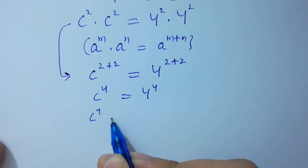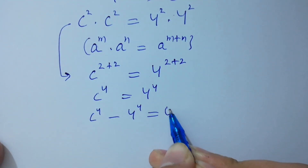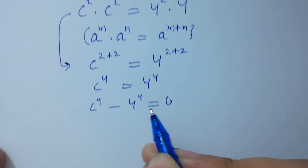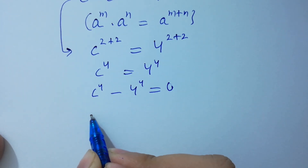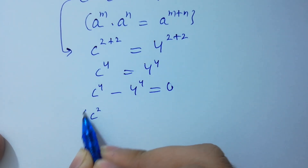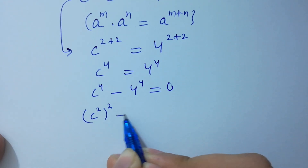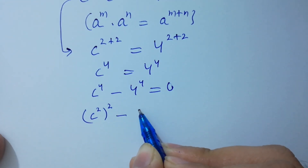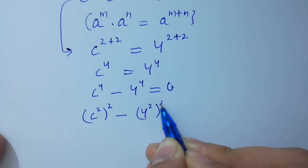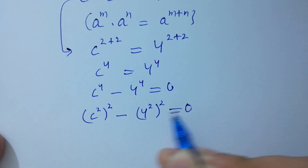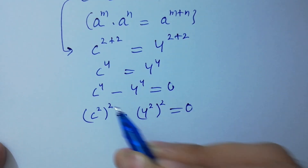So c to the power 4 minus 4 to the power 4 equals 0. This is the same as c squared all squared minus 4 squared all squared equals 0, because 2 times 2 equals 4.